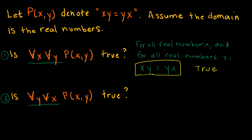Statement two says 'for all y and for all x' — essentially the exact same meaning, but now asking: for all real numbers y and for all real numbers x, is that statement still true? Yes, it is, because as we said, the order doesn't matter. So both statements are true; it didn't matter if x came first or y came first.